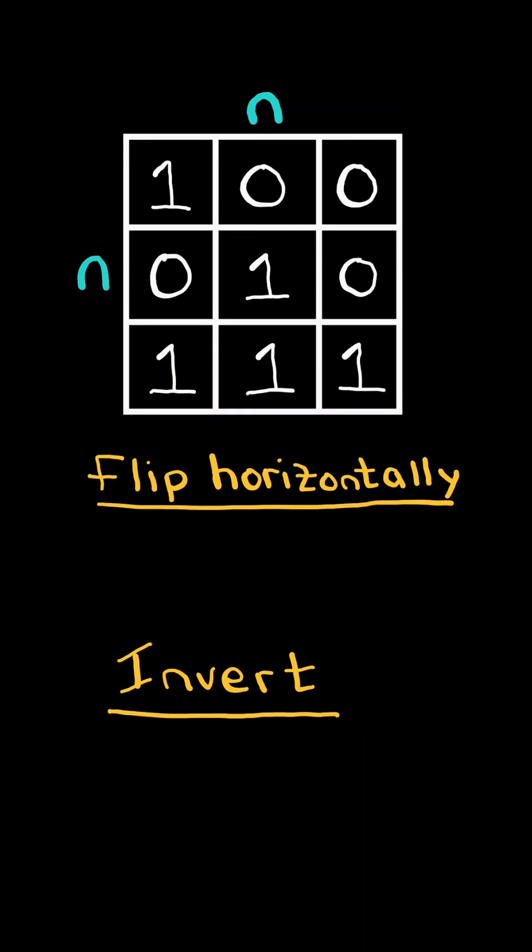And we continue to the next row. At the end, we return the new matrix that has been horizontally flipped and inverted. We will solve this in O of the length of the matrix time, n squared.